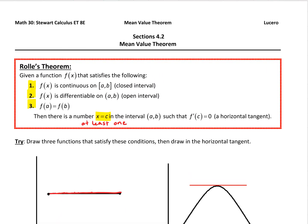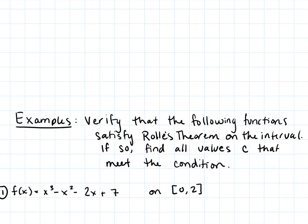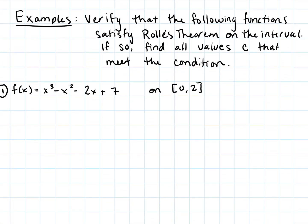We're going to use Rolle's Theorem for a couple quick examples. I'm not going to go through the formal proof here, but it's laid out nicely by cases in the textbook — check that out if you want. Now, a theorem only works if you meet the criteria of the hypothesis. The first thing when applying Rolle's Theorem is verifying that we actually satisfy the conditions.